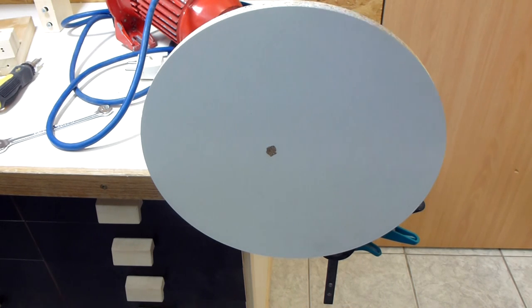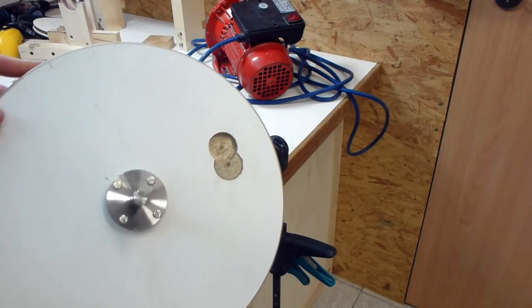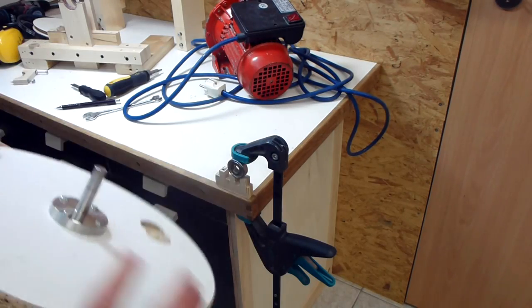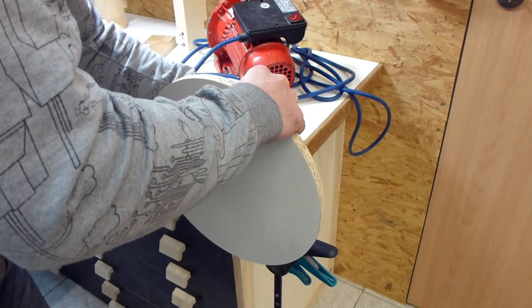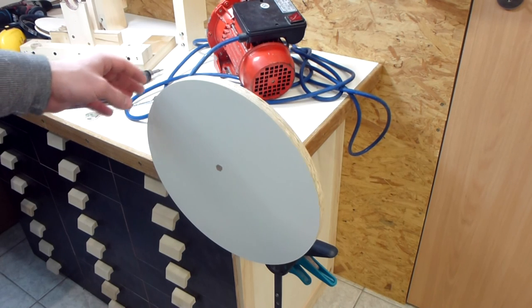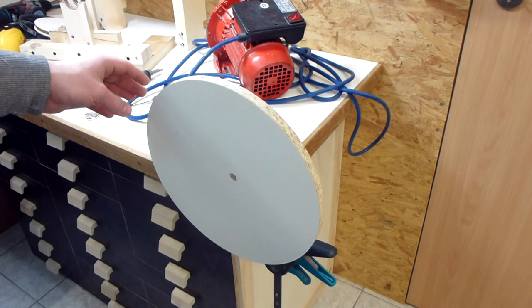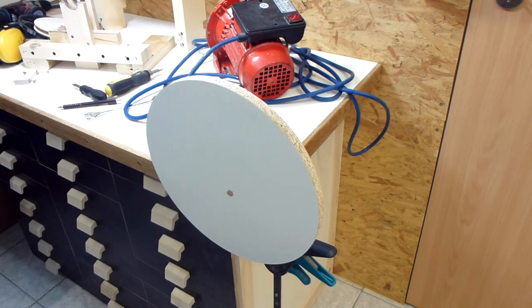You can clearly see that there is a heavy spot in the disc so I marked where that is and removed some material from there. Now with these two balance holes it is pretty much perfectly balanced. No more heavy spots. So let's put it back together.